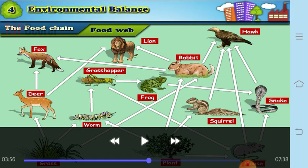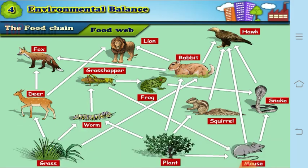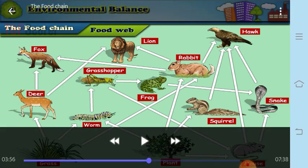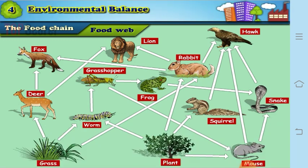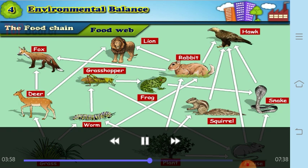Now can you see some intricate patterns here? Do you think the grasshopper is only eating the worm, or is the grasshopper eaten only by a frog or a bird? No. Each living organism can be part of a number of food chains. Each one of them is part of different chains, and such an intricate or networked food chain is called a food web.